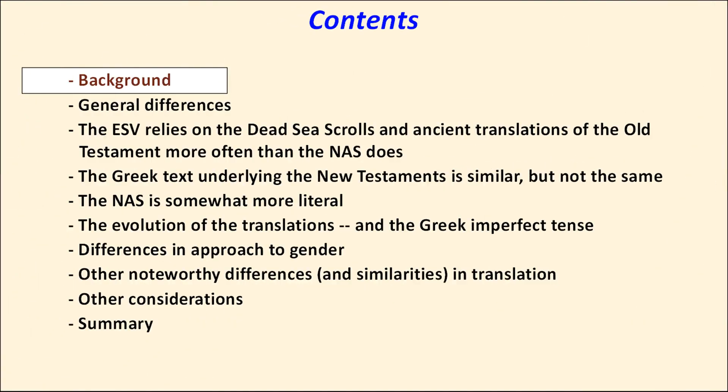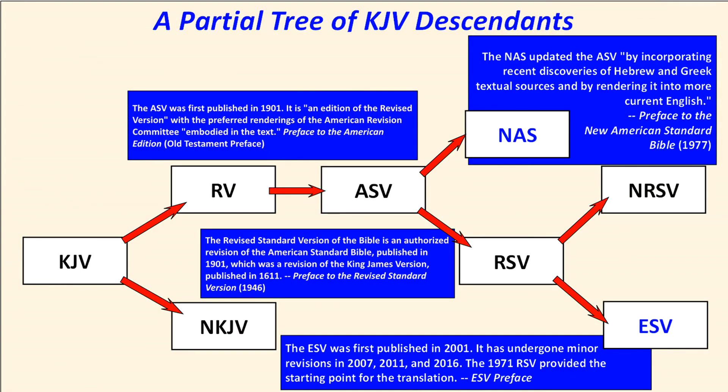We'll begin with some background on the two translations. This chart shows a partial family tree of descendants of the King James Version. Both the New American Standard and the English Standard versions are descended from the American Standard Version of 1901 — the ESV through an intermediary, the 1971 edition of the Revised Standard Version, or RSV.